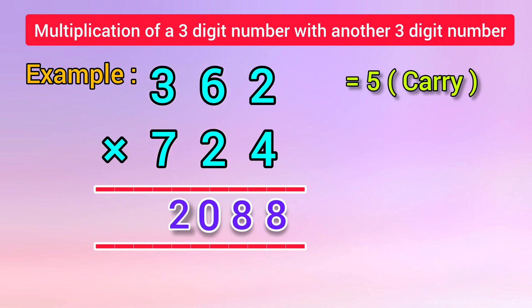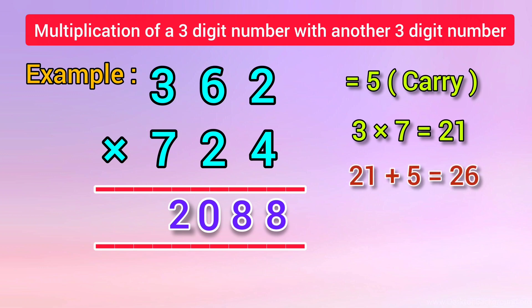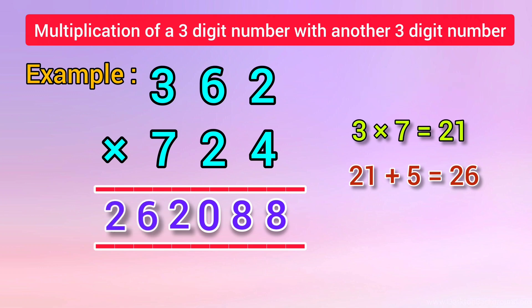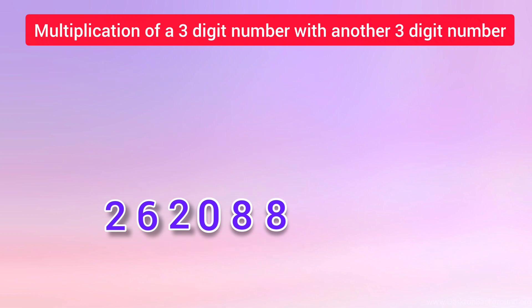In the final step, we vertically multiply the digits of the column on the left-hand side. That is, 3 into 7 is equal to 21. We add 5, which is carried over from the previous step: 21 plus 5 gives 26. We put down 26. Therefore, the answer is 262088.